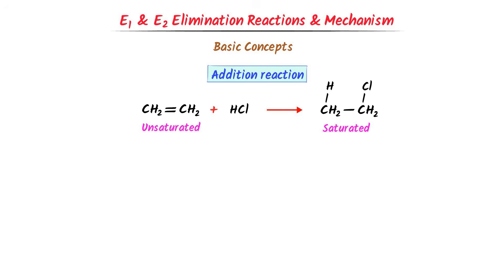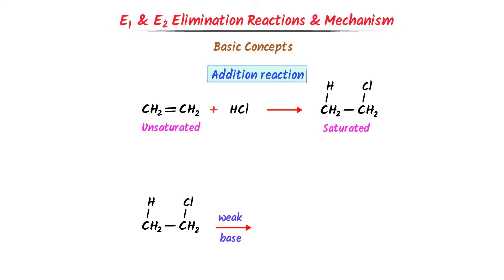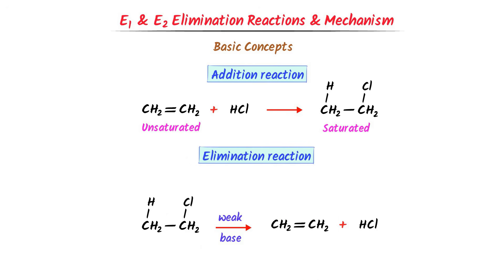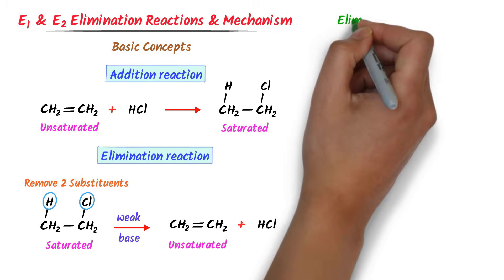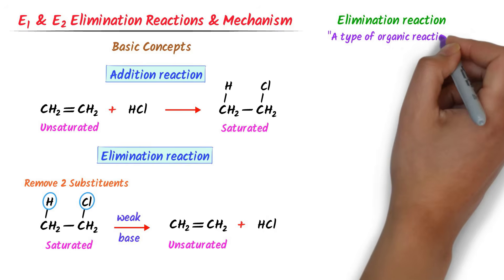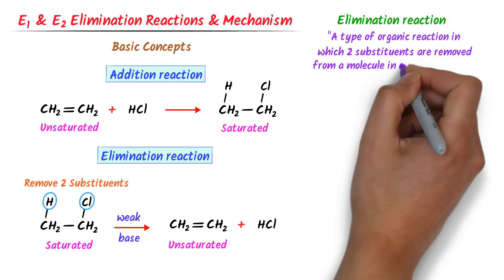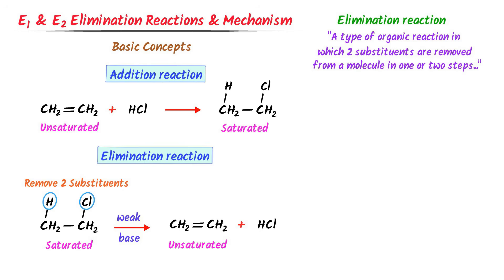Now consider the opposite case. I take an alkyl halide and add a suitable reagent like a weak base. After reaction, I get alkene like ethene plus HCl. We call this an elimination reaction, because this compound eliminates or removes two substituents like hydrogen and chlorine. With the help of elimination reaction, we convert saturated compounds to unsaturated compounds. Hence, elimination reaction is the opposite of addition reaction.